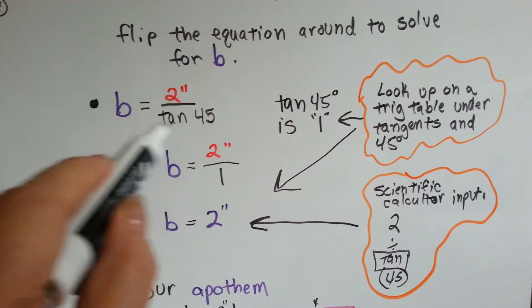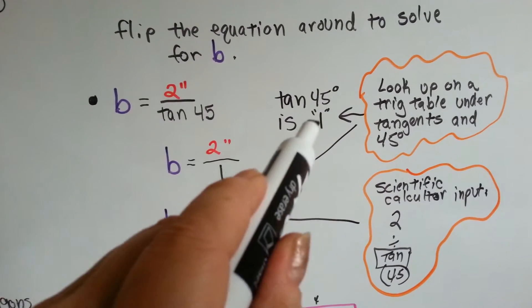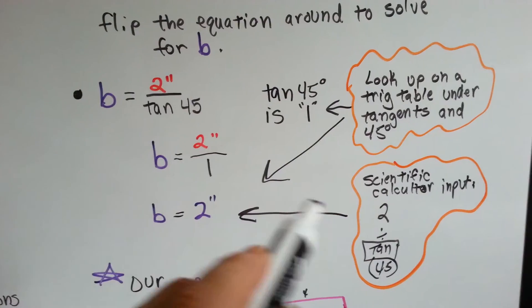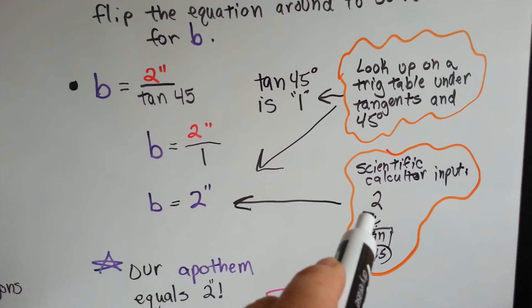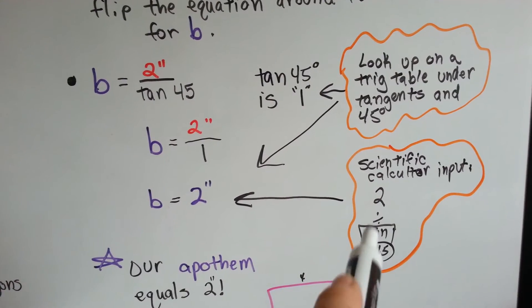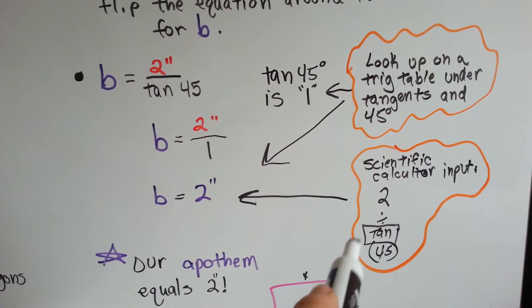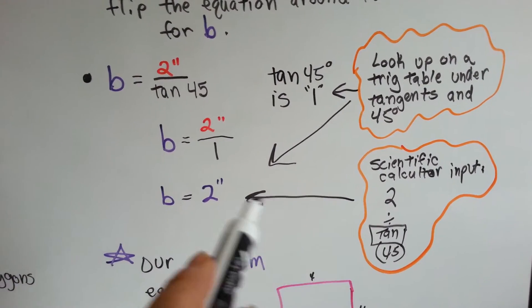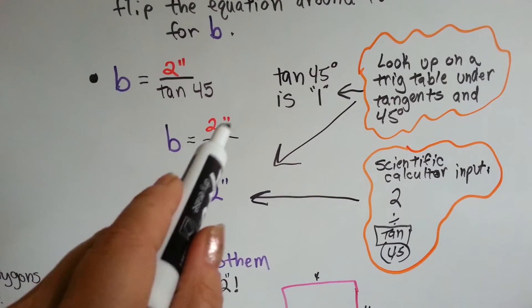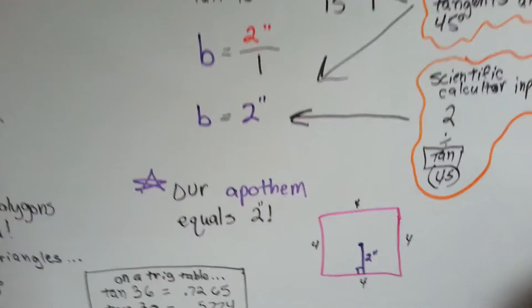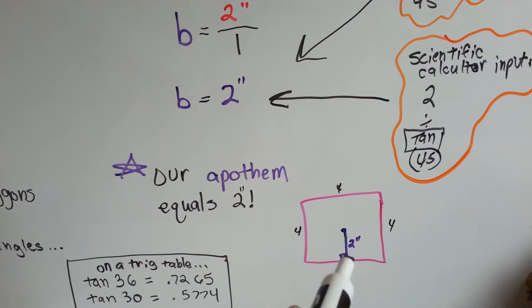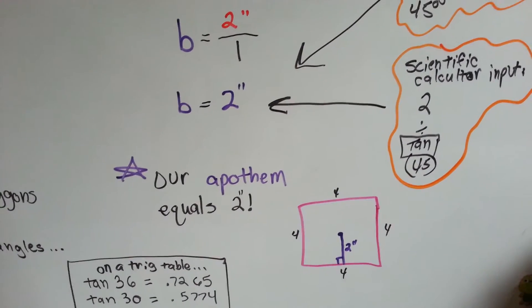So, because this was our equation, we've got 2 inches over 1 now. Now, if you have a scientific calculator, all you have to do is type in 2, a division sign, either like that or the slash, hit the tangent button, and type in 45, and you'll get 2 inches. 2 inches divided by 1 is 2 inches. So, our apothem is equal to 2 inches. So, this little line here is 2 inches. We found him.